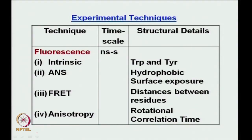Some experimental techniques: fluorescence has a relevant time scale from nanoseconds to seconds. Intrinsic fluorescence means something present in the protein itself — amino acids like tryptophan and tyrosine are mainly used. ANS, or 1-anilino-8-naphthalene sulfonic acid, is a dye commonly used to look at exposure of hydrophobic patches in proteins. You can look at changes in ANS fluorescence intensity to figure out what is going on as you change conditions.